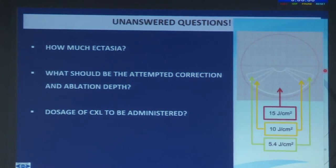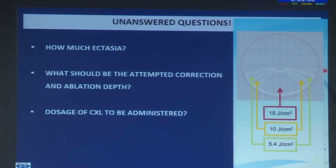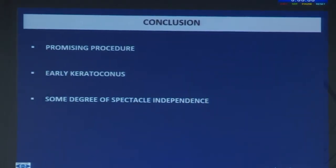There remain many unanswered questions: how much ectasia to treat, what should be the maximum ablation, and what dosage of CXL to administer — especially with the advent of customized cross-linking and combined nomograms. It is still an evolving science but exciting times for mild to moderate keratoconus, where a number of patients can be rehabilitated extremely well. This applies only in early keratoconus.